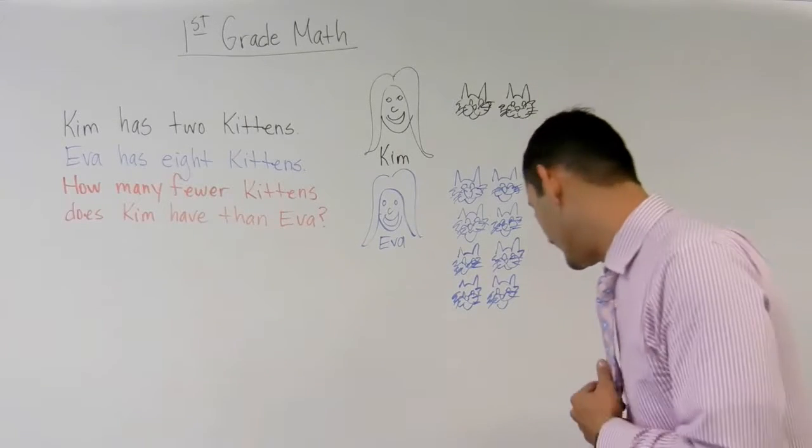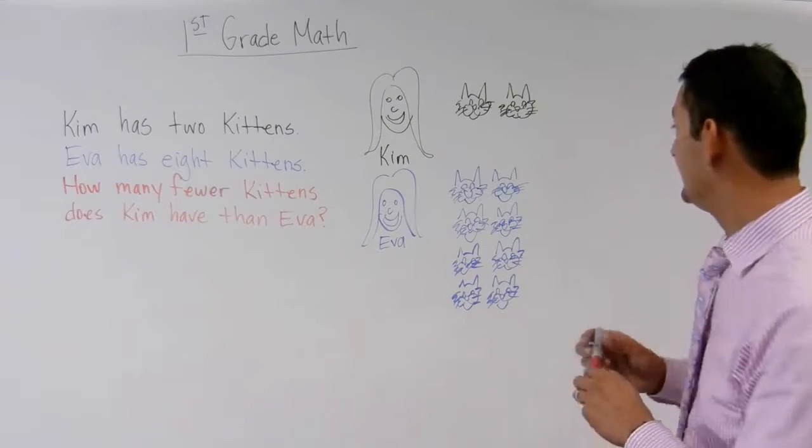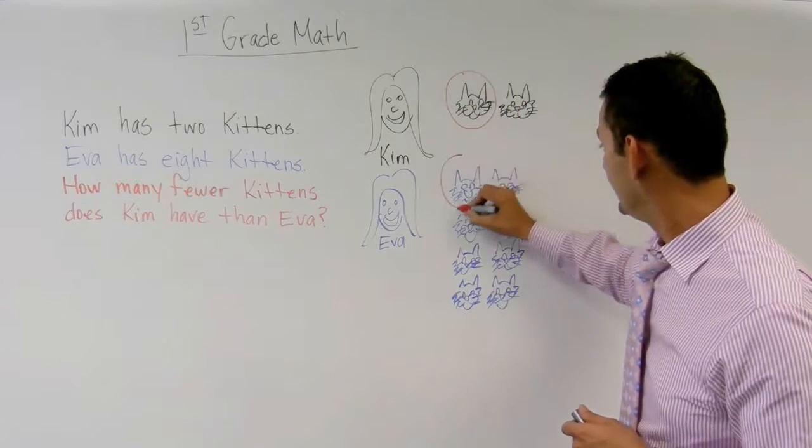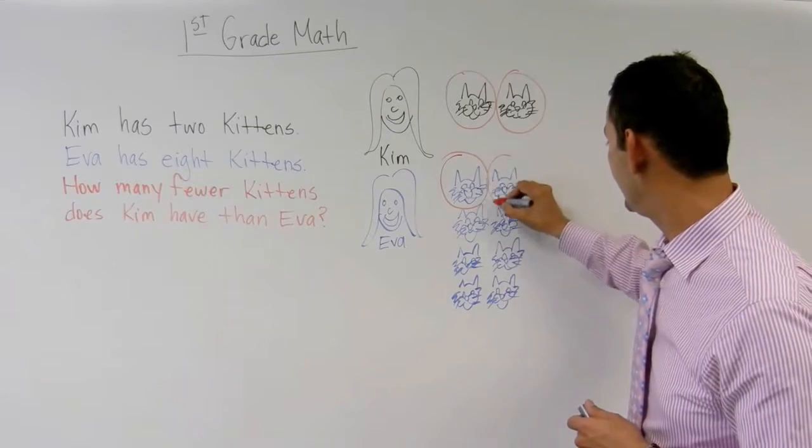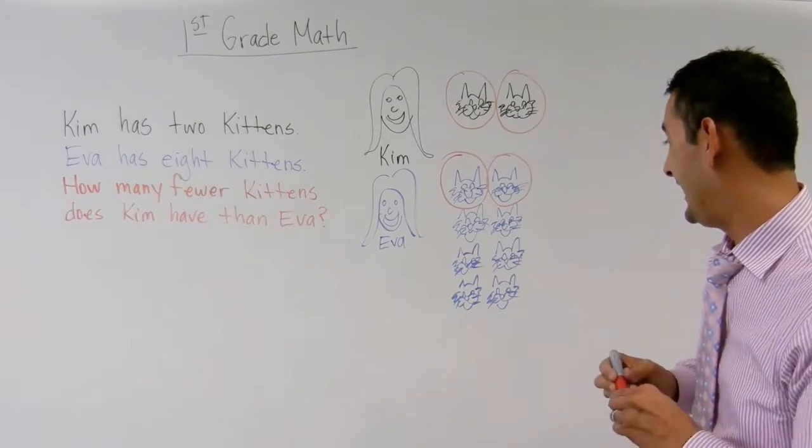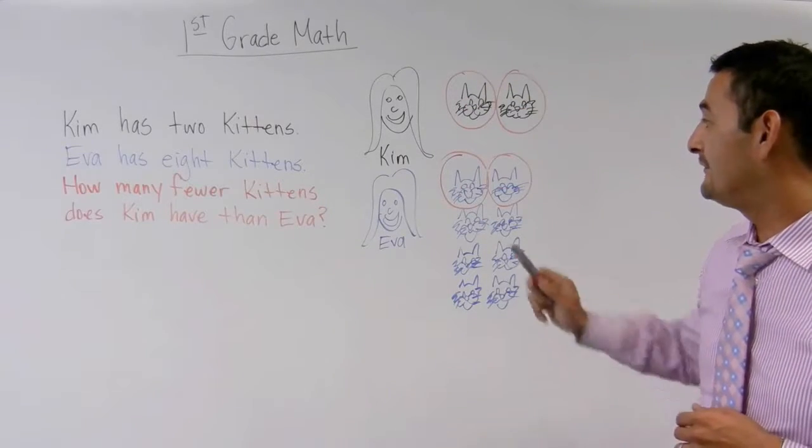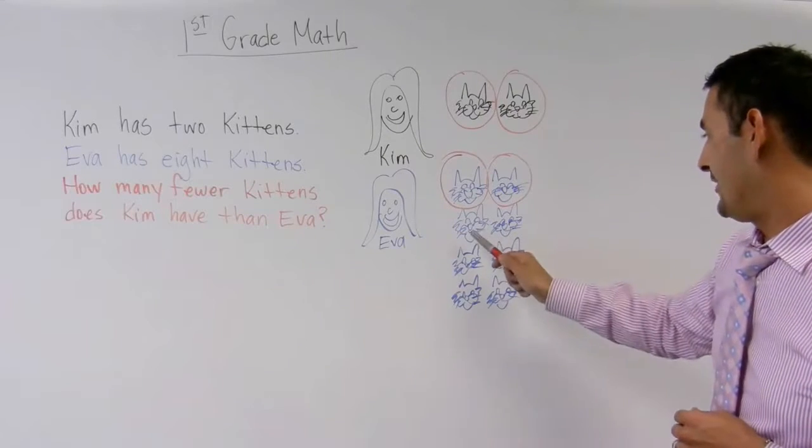So now what I'm going to do is I'm going to go ahead and start to take these away. So I'm going to take this one away, take that one away, take this one away from Kim and take this one away from Eva. So now that I've canceled these out, let's see how many fewer kittens Kim has than Eva. So let's count.